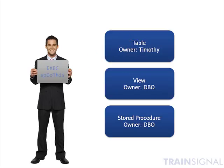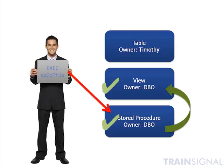Let's take another example. Same setup: my user tries to execute the stored procedure, I've given him permission, and I have not given him permission to the view or to the table. However, this table is not owned by DBO — it has a different owner, Timothy. My user runs exec sp_do_this. He accesses an object and SQL checks his permissions — yes, he's allowed. The stored procedure accesses a view and SQL Server says the owner hasn't changed, so keep going. The view queries information from the table — but wait, SQL says we've changed owners, so it checks direct permissions against this object, and he doesn't have any. So the stored procedure execution is going to fail.